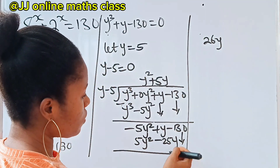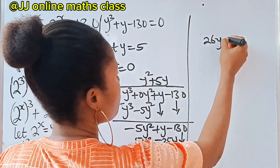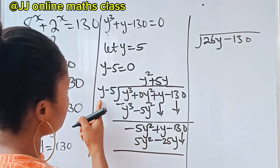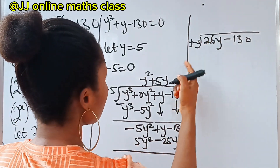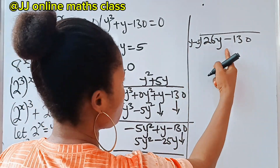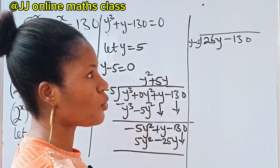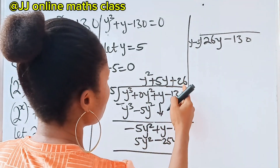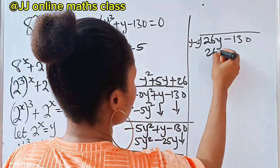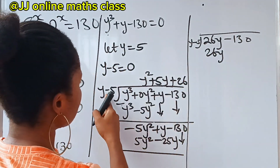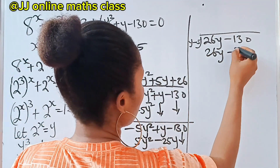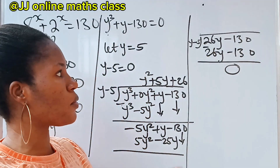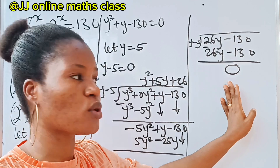We bring down minus 130 and divide again — remember we are dividing by y minus 5. When y divides 26y we get 26, so we have plus 26. Then 26 times y gives 26y, and 26 times minus 5 gives minus 130. Subtracting gives 0, so we stop.